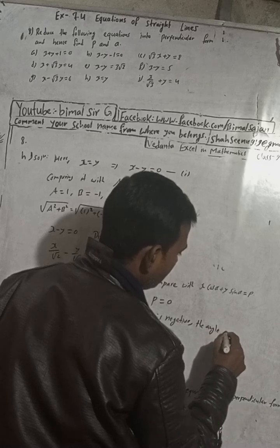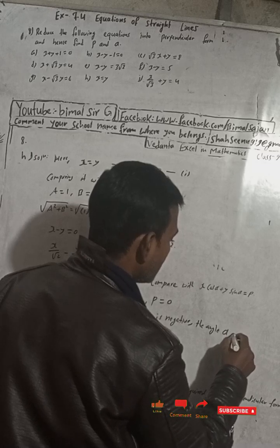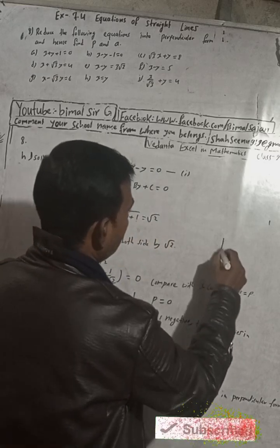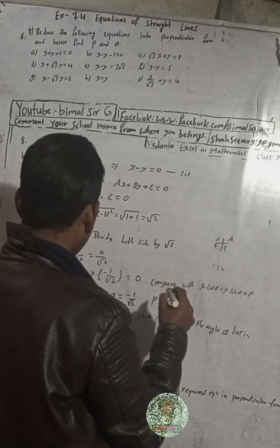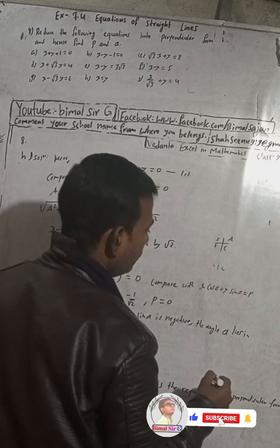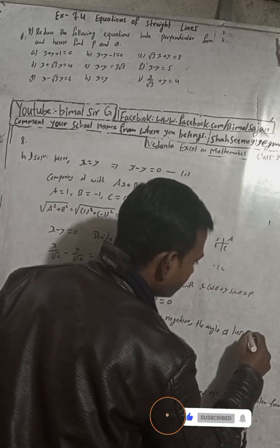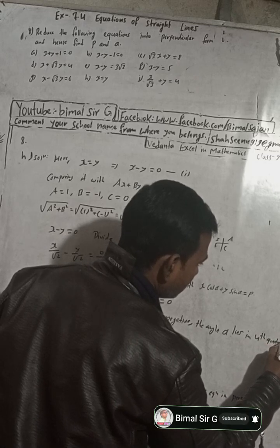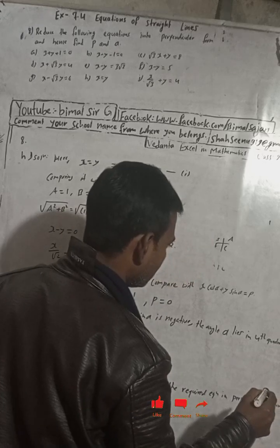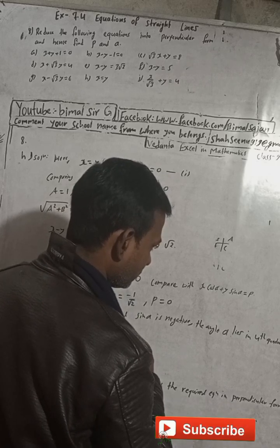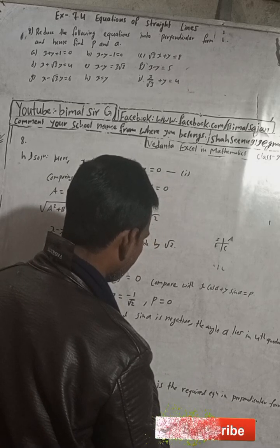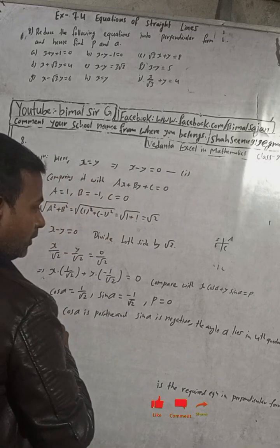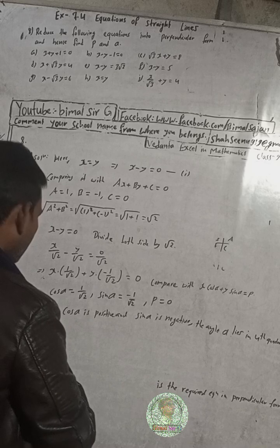Now, the angle alpha — which quadrant does it lie in? Since cos α is positive and sin α is negative, that corresponds to the fourth quadrant. So the angle alpha lies in the fourth quadrant.